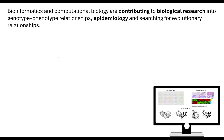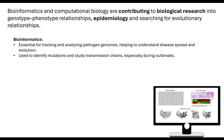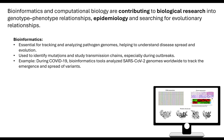The second key area is epidemiology. For bioinformatics, this is essential for tracking and analysing pathogen genomes, helping to understand disease spread and evolution. If we can understand diseases, we can identify mutations, study transmission chains, and understand where and how it started. COVID-19 is a prime example — bioinformatic tools analysed the SARS-CoV-2 genome worldwide and were therefore able to track the emergence and spread of variants.